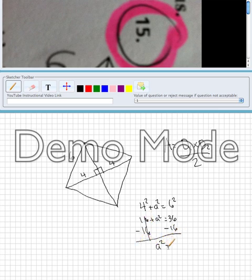So we have a squared equals 20. And then if we square root both sides, we'll end up with 2 radical 5.